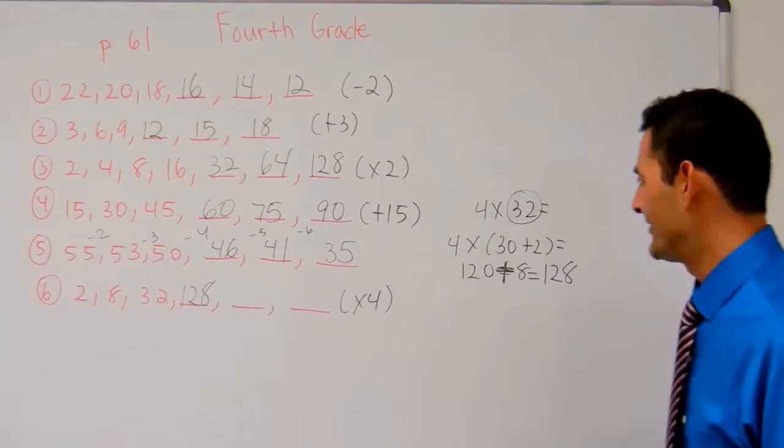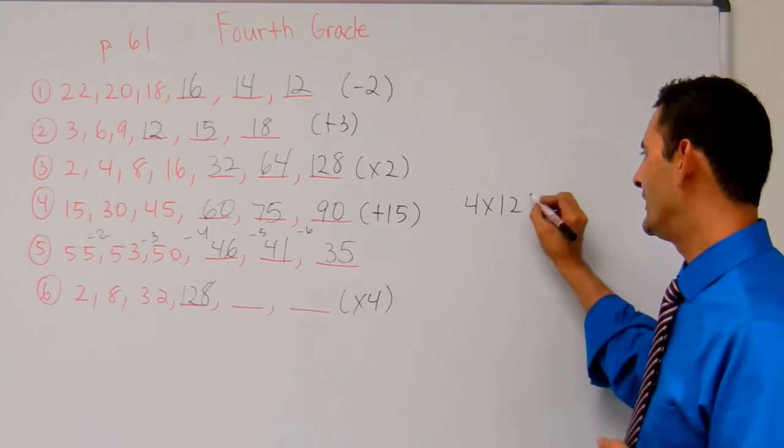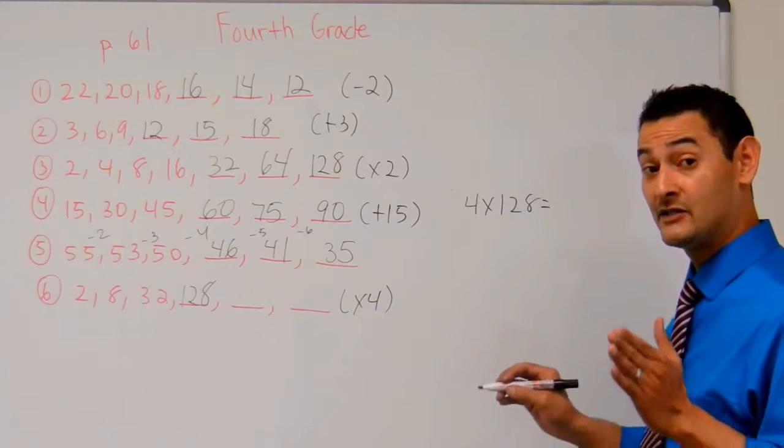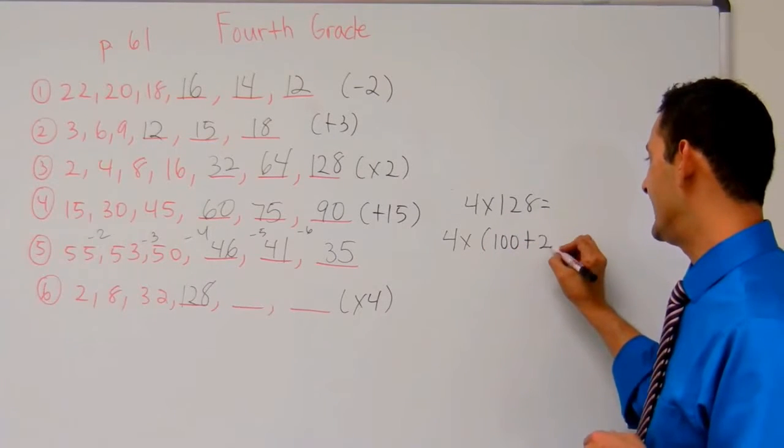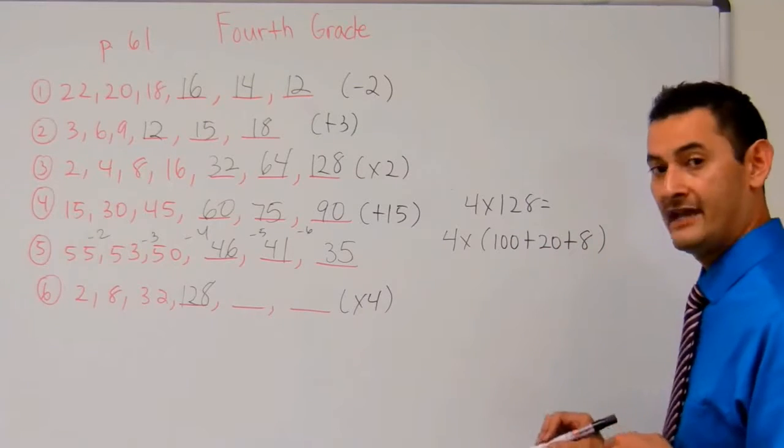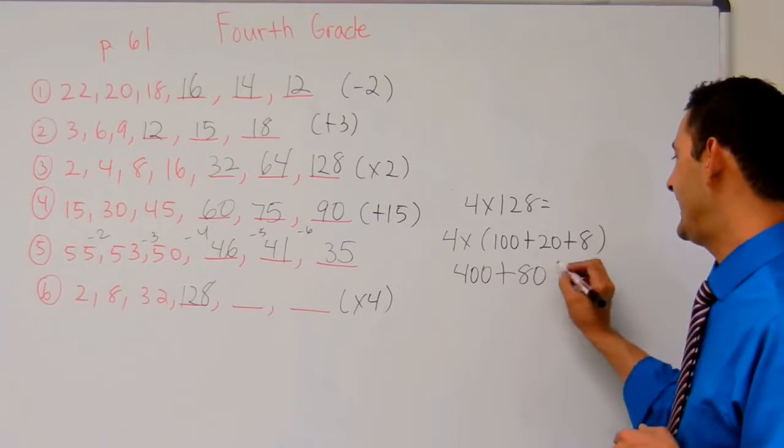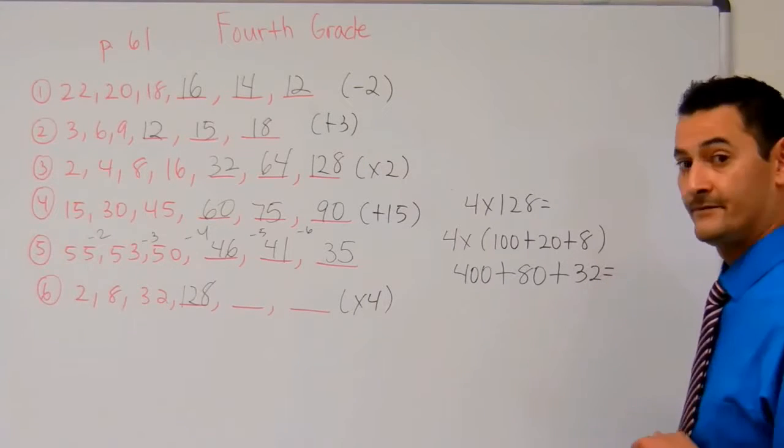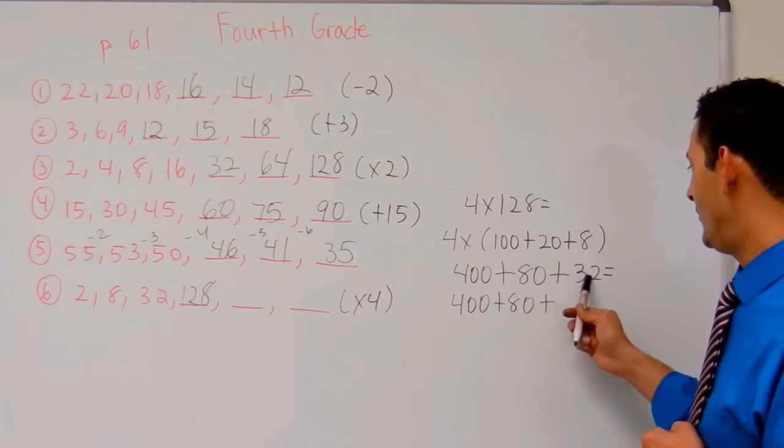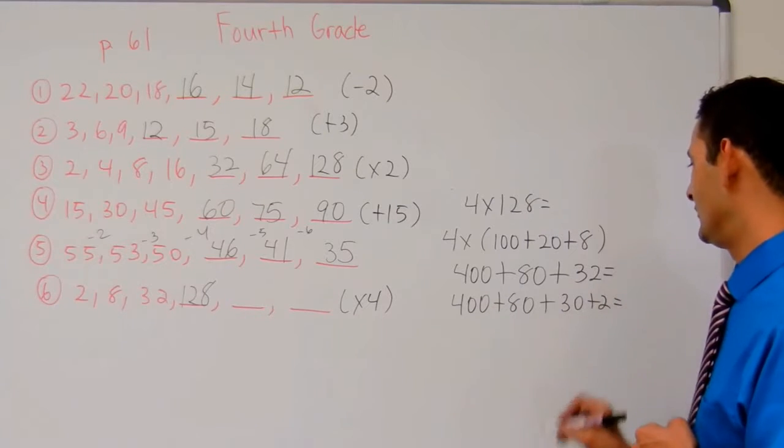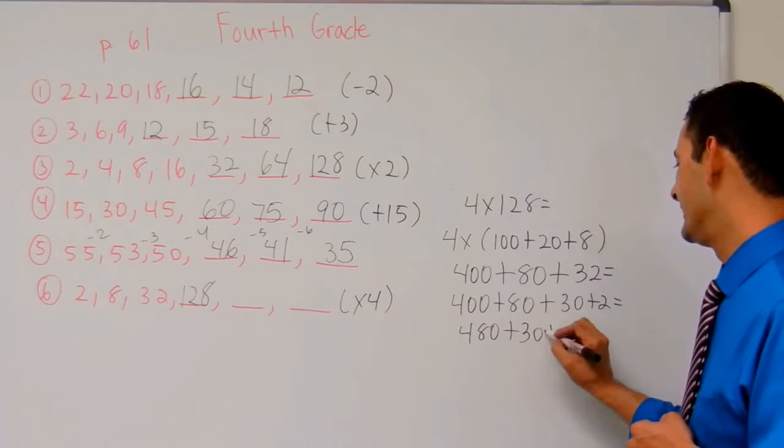And now these numbers are going to get large because we're multiplying by 4. That's okay. So here we have 4 times 128 equals. I'm going to use the distributive property again. Here I've got 4 times 100 plus 20 plus 8 equals. 4 times 100, that's 400, plus 4 times 20, that's 80, plus 4 times 8, that's 32, equals. So now I can do 400 plus 80 plus 30 plus 2 equals.